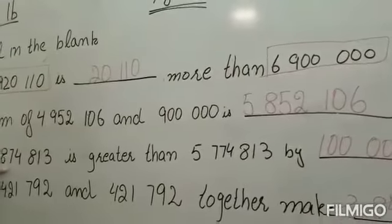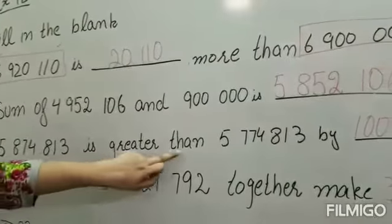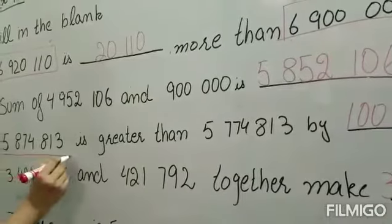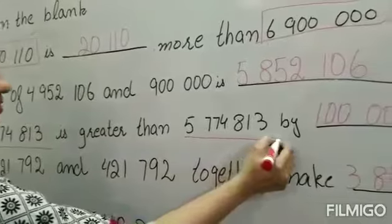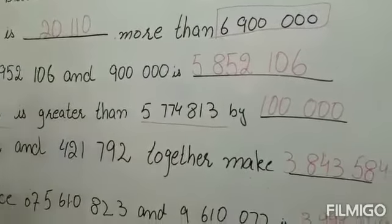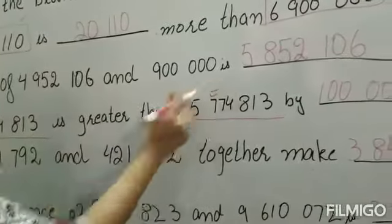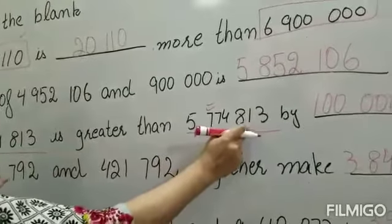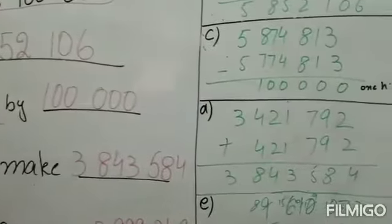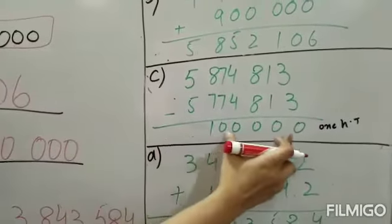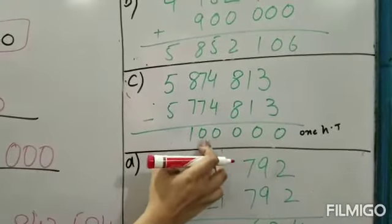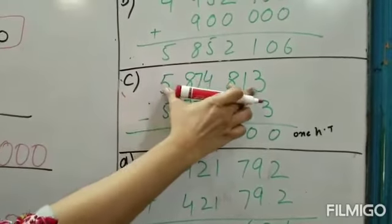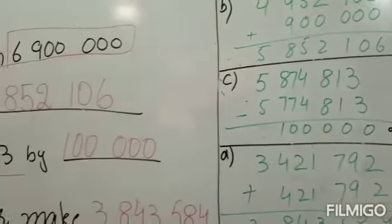Blank C: 5874813 is greater than 5774813 by. आपके पास first number है 5874813 जो greater है 5774813 से। आप देख सकते हैं कि 1st digit और 2nd digit में 8 है और 7 है। जो answer निकालना है, आप दोनों values को minus करें। मैंने minus किया तो answer 100000 आया। यही number है जो remaining है, इसे मैंने अपनी blank में put कर दिया।